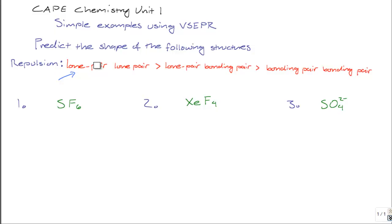We have three examples which we are going to do in this video. The first is sulfur hexafluoride, SF6. Sulfur hexafluoride is composed of one sulfur atom, which is your central atom, and six fluorine atoms. The number of electrons on the central atom is most important for VSEPR theory, so that's what we are going to focus on.